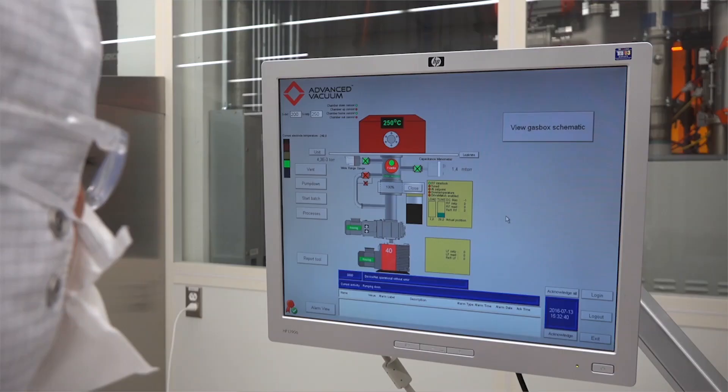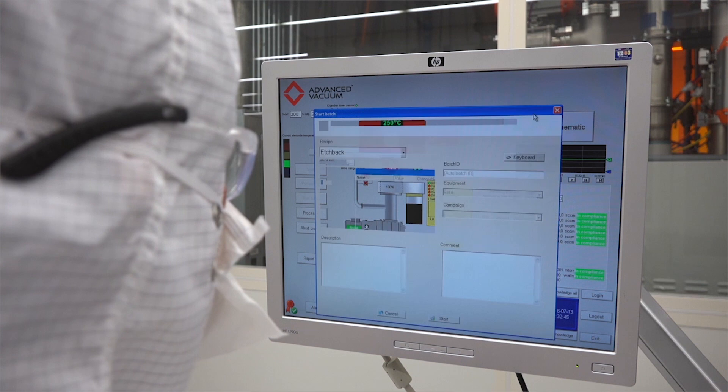we run a special recipe called an etch-back. This process creates a plasma in the system that does not deposit material but rather cleans the chamber. This plasma removes or etches any material we may have just deposited on the walls and the base of the chamber. This cleans the system because we don't know what material the next user will deposit. And our remaining deposited material may contaminate their thin film. Thank you for watching our demonstration of the PECVD deposition system.